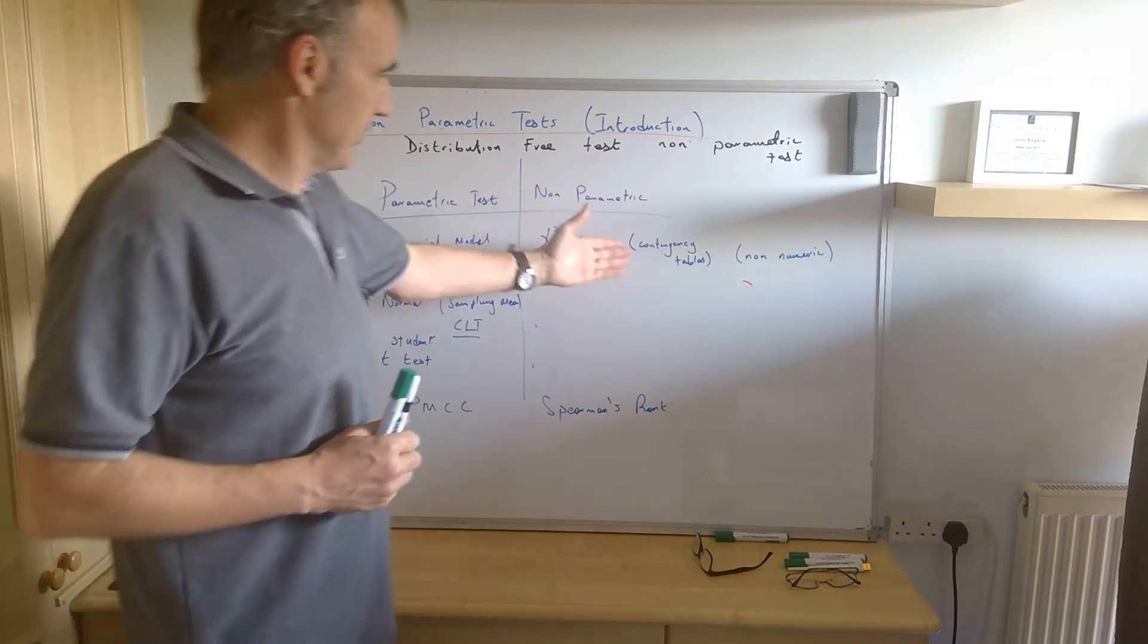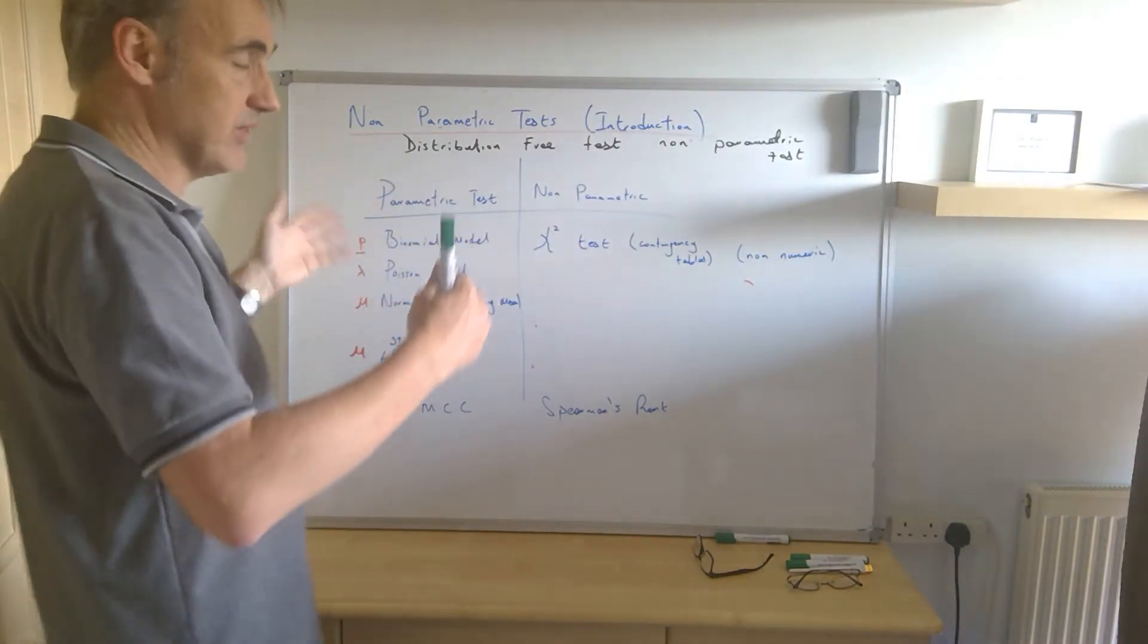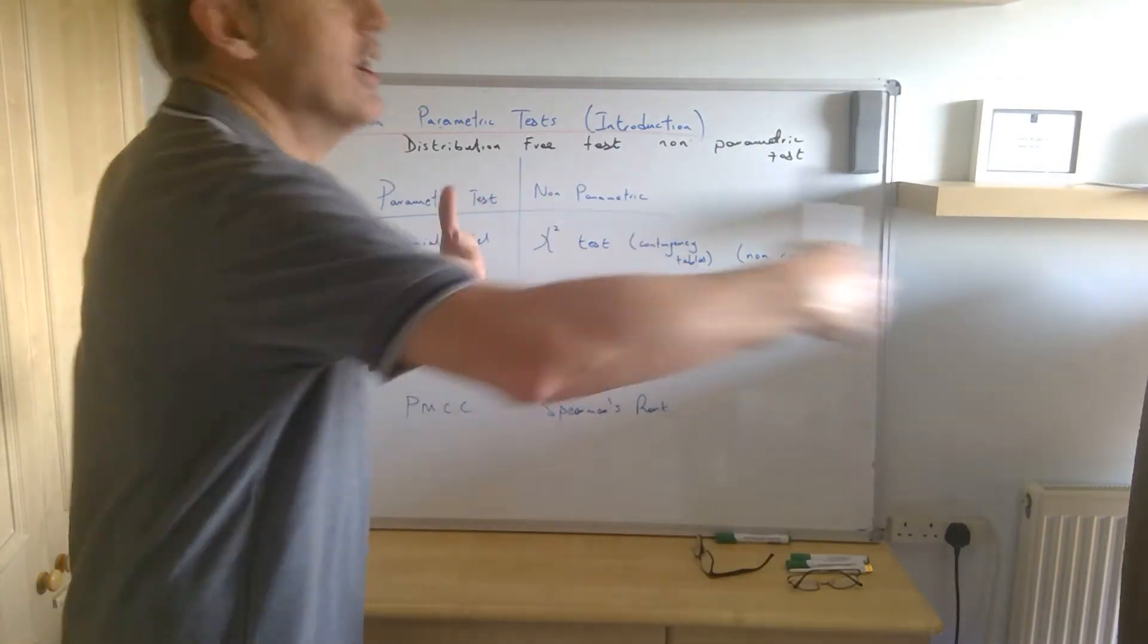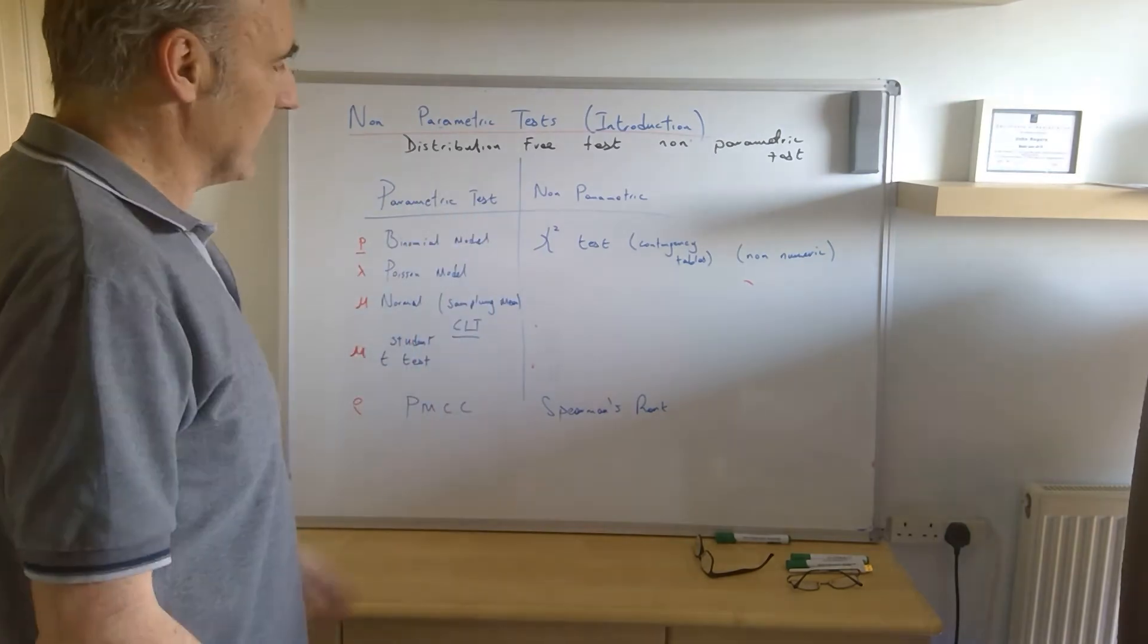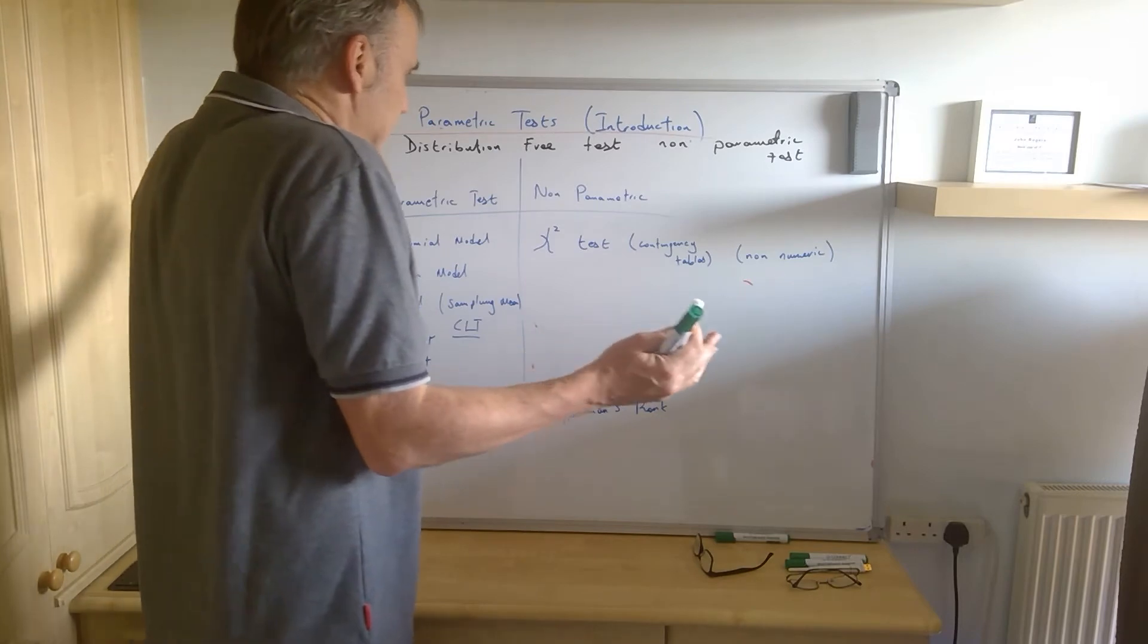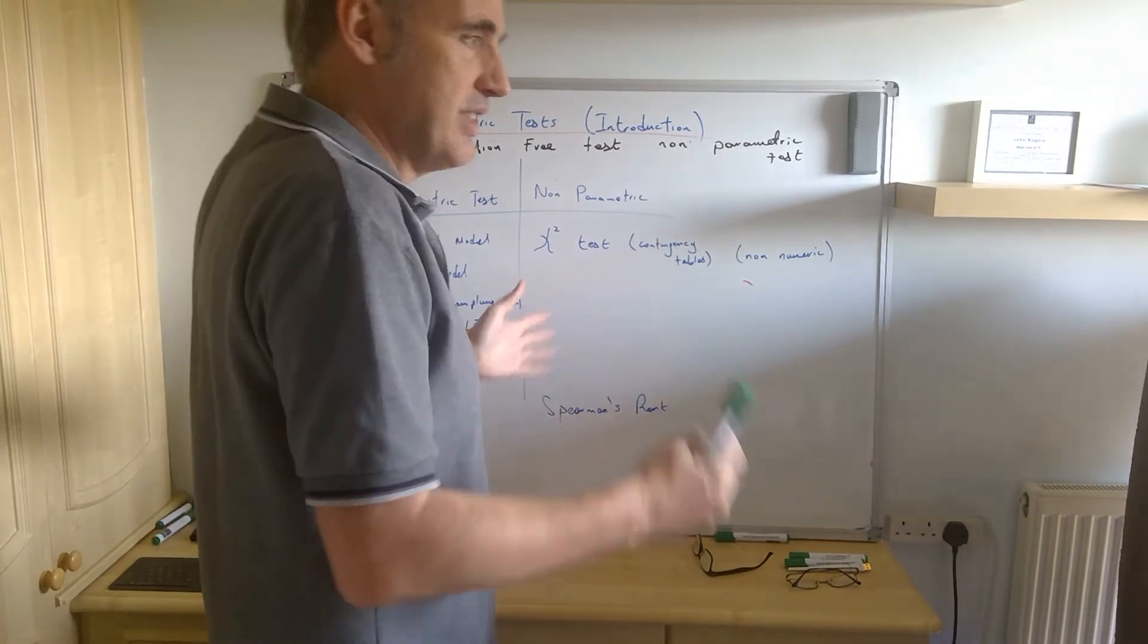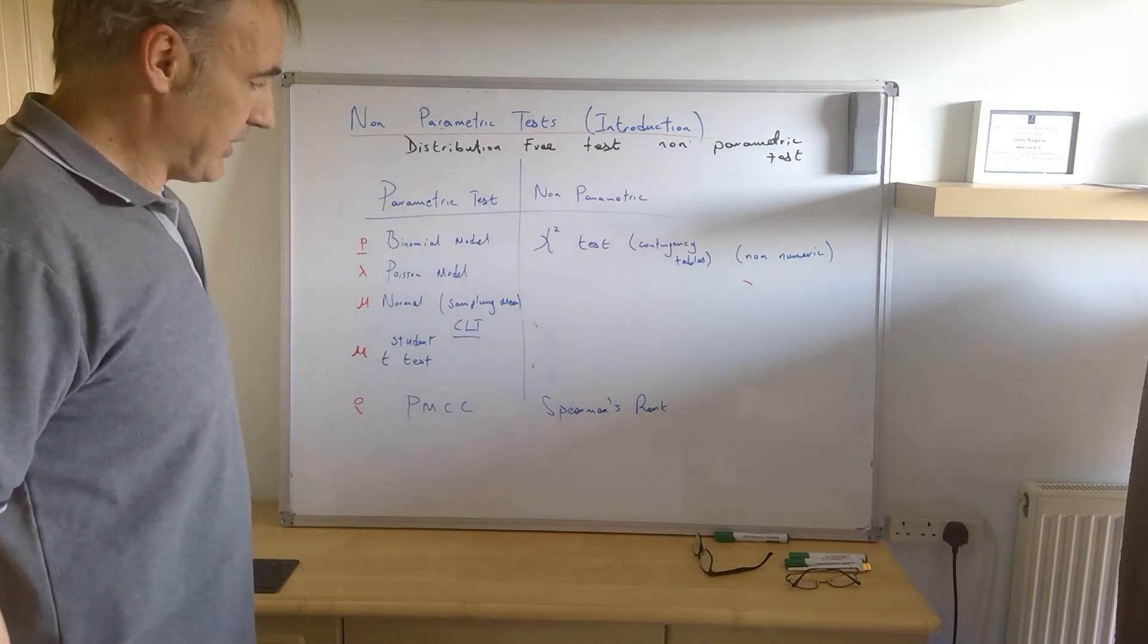Chi-squared is a non-parametric test. Well, in many cases with contingency tables, it's not even numeric. You talk about the numbers of different types of things and comparing ratios and things like that. So the data isn't, by definition, it's distribution-free because it's not even numeric, the original data. So that's chi-squared for you.